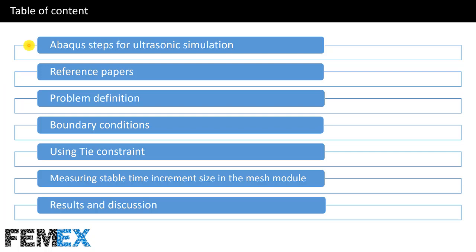This is the table of content. I will talk about Abaqus steps for ultrasonic simulation, reference papers, problem definition, boundary conditions, using tie constraints, measuring a stable time increment size in the mesh module, and finally results and discussion.